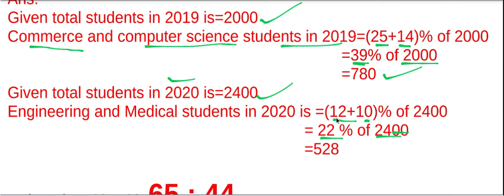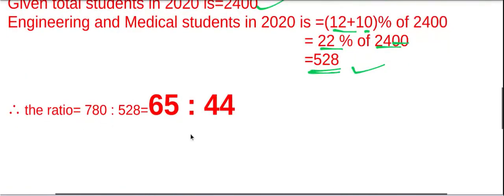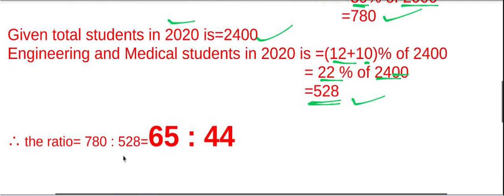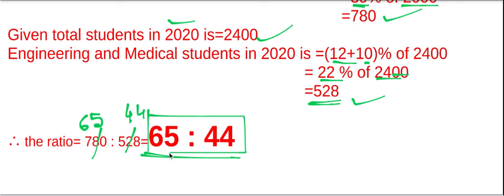So the ratio is 780 to 528. Dividing both by 12: 780 divided by 12 equals 65, and 528 divided by 12 equals 44. Therefore, the required ratio is 65 is to 44.